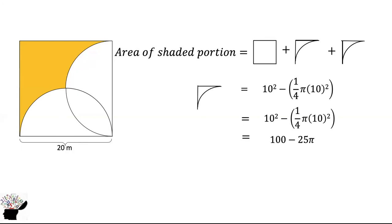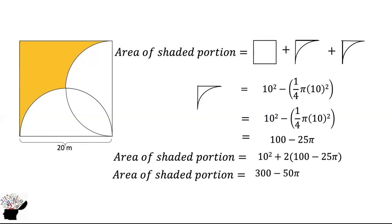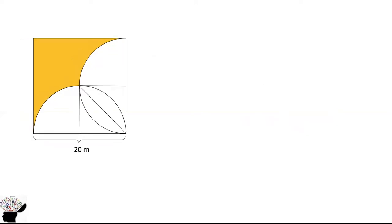From there we get the area of the arc shape to be 100 minus 25π. Since we have two arc shapes, the area of the shaded portion is 10 squared plus two times the arc shape area, giving us 300 minus 50π. The area of the shaded portion is approximately 142.92 square meters. This is the first approach — let us look at the second method.